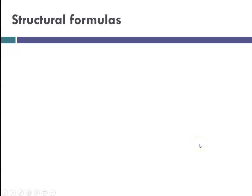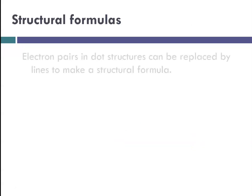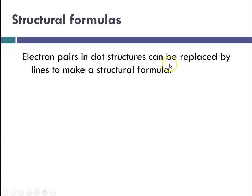So another way to show bonding, particularly covalent bonding, is to show the electron pairs and dot structures replaced by lines. So instead of the dots, we put a line to show a bond. And a single bond is one line, and that would be, for instance, chlorine and chlorine sharing a pair of electrons, one from each. And so we would draw a line.